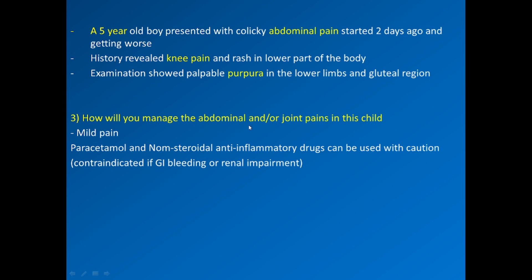How do you manage abdominal pain and joint pain in this child? If the pain is mild, paracetamol and non-steroidal anti-inflammatory drugs can be used with caution, as contraindications include GI bleeding or renal impairment. If the pain is moderate to severe, steroids can be used.